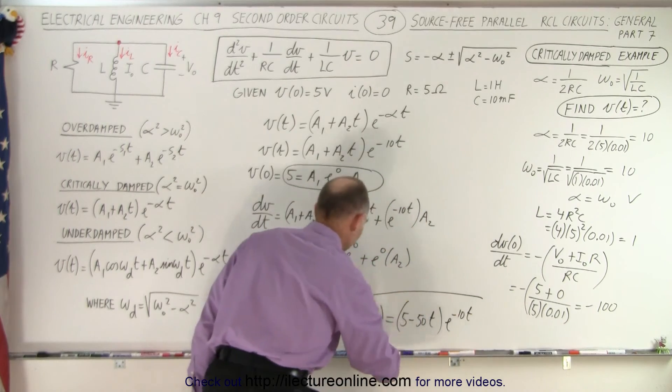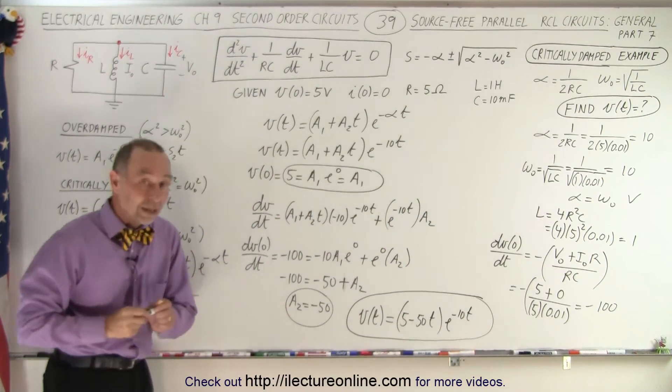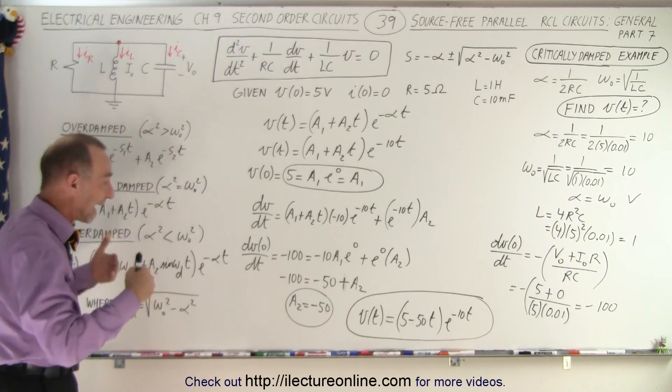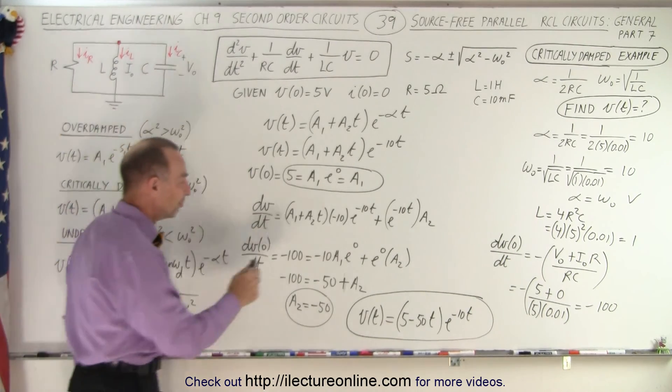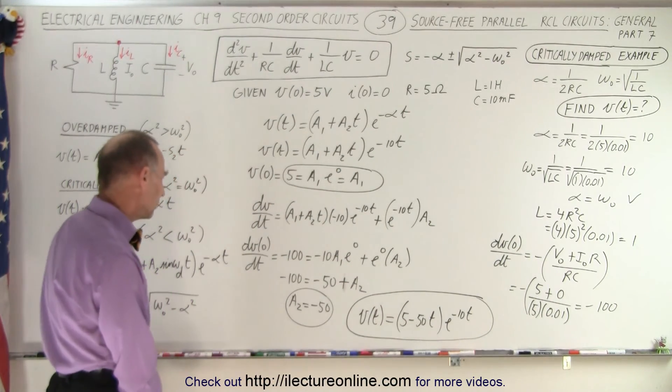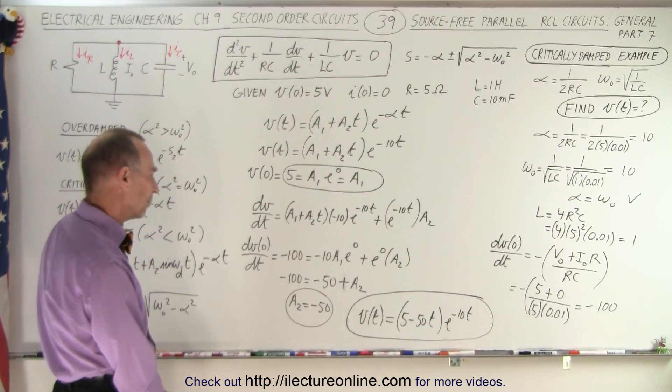And there is the equation for the voltage across the capacitor which is the same as the voltage across the inductor or the voltage across the resistor as a function of time which is 5 minus 50T E to the minus 10T. Let me quickly check to see if I got that right.